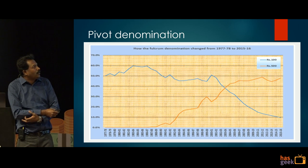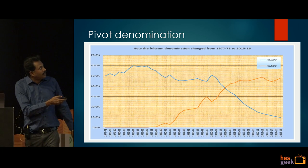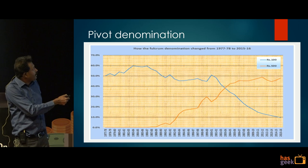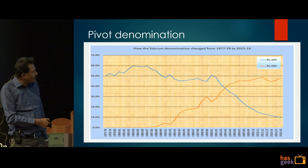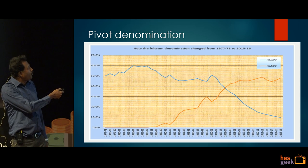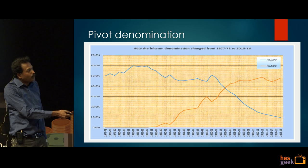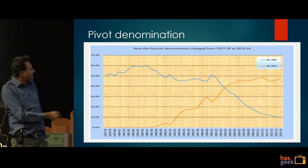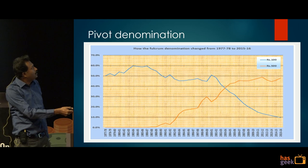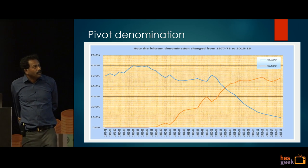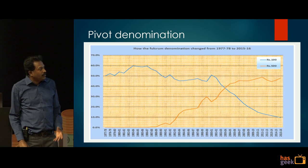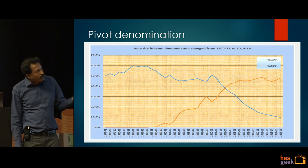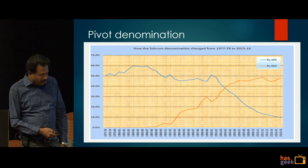Going back to the RBI records, I looked at data from 1977 to 2016. The 100-rupee note was around 50 percent at that time and came down to 10 percent. The 500-rupee note was introduced around 1987-88 and has now reached around 50 percent. During the 1977-78 demonetization they did not touch the 100-rupee note which was heavily in circulation, but this time they removed the pivotal currency from circulation.